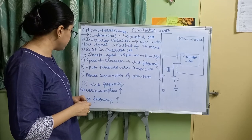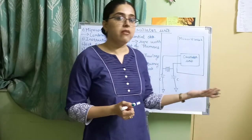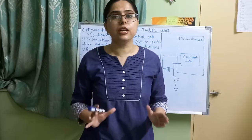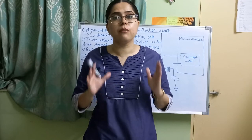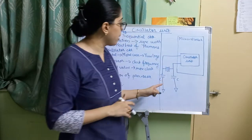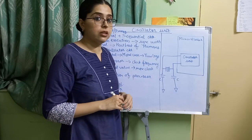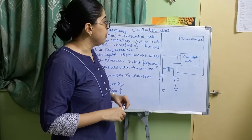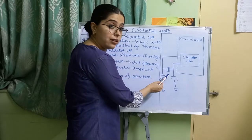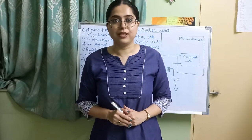When power consumption increases, clock frequency is also more, and if clock frequency is decreased, power consumption will automatically decrease. The diagram on the right side represents the oscillator unit inside the microcontroller. Inside the microcontroller there is an oscillator unit; we have connected the quartz crystal in the middle and there are two capacitors. That was all about the oscillator unit in embedded systems.